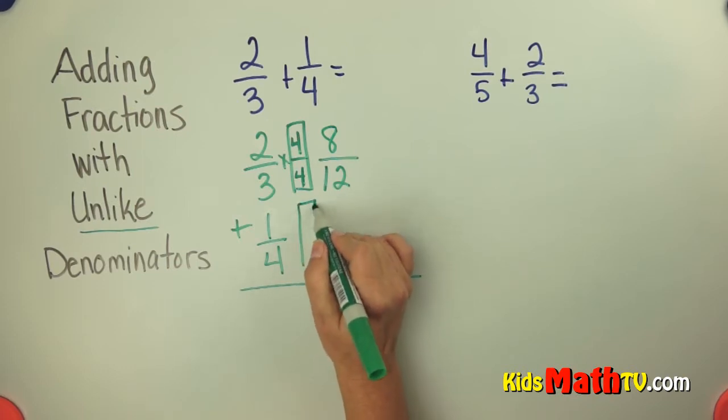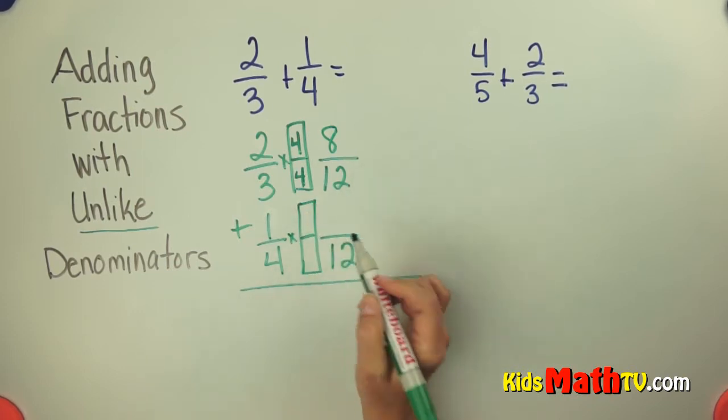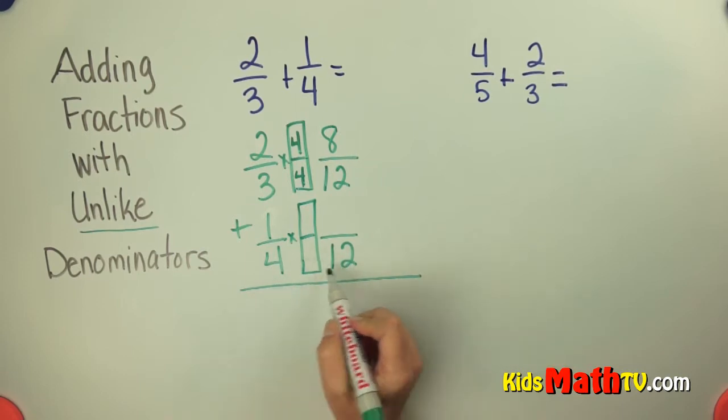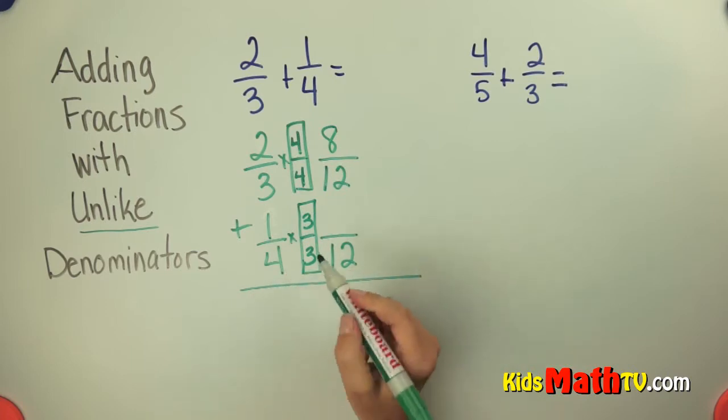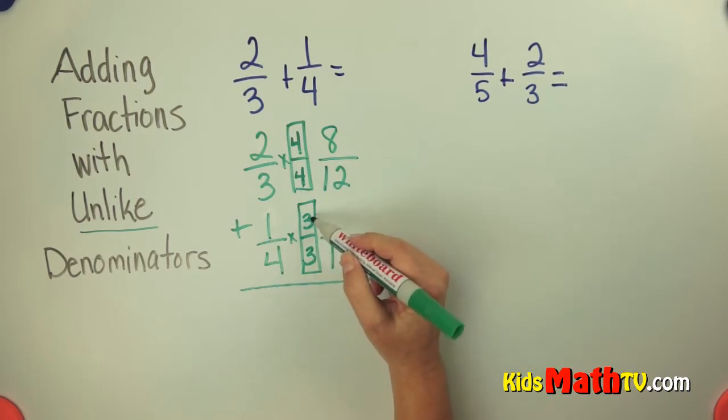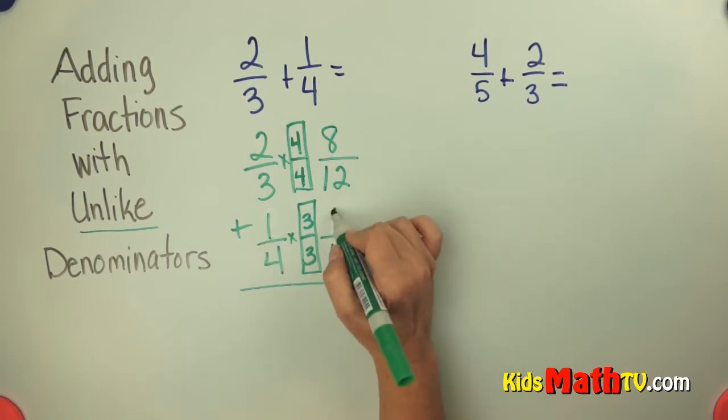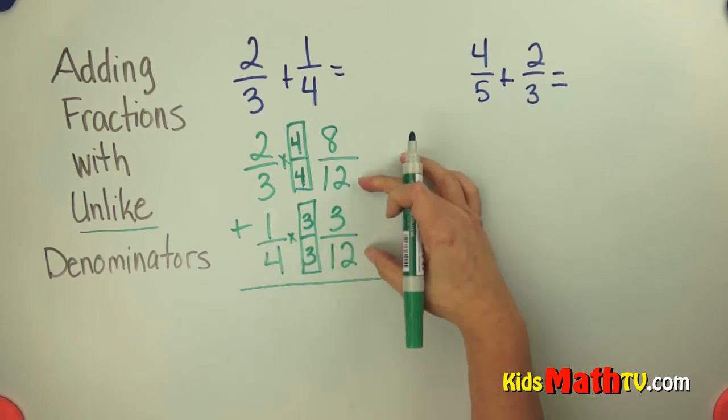I'll do the same thing down here. Multiply by this 1. And I'm going to make this 1 into 3 over 3 because 4 times 3 gives me 12. So whatever I multiply on the bottom, I have to multiply on the top. 1 times 3 is 3. Now I have common denominators.